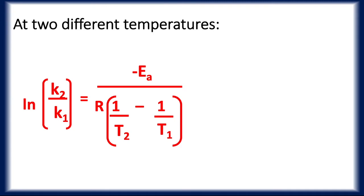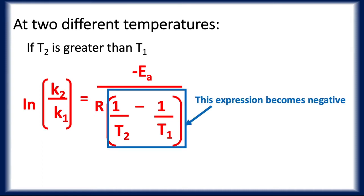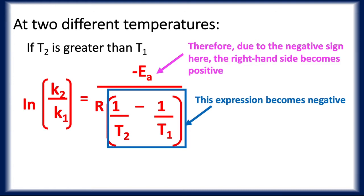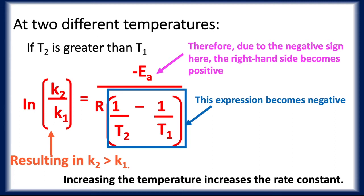So we can look at the Arrhenius equation at two different temperatures, and what this is basically telling us is that if T2 is greater than T1, then that expression becomes negative. And because we have minus the activation energy on top, then the right hand side becomes positive, because R, which is the gas constant, is always positive. And that results in the rate constant K2 being larger than K1, and therefore an increase in temperature increases the rate constant, which is what you'd expect from the rates topic which you've studied.